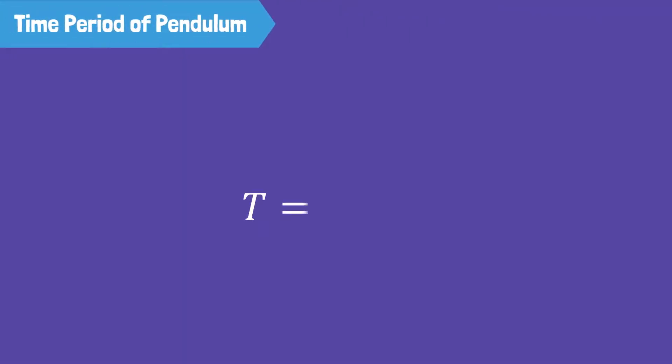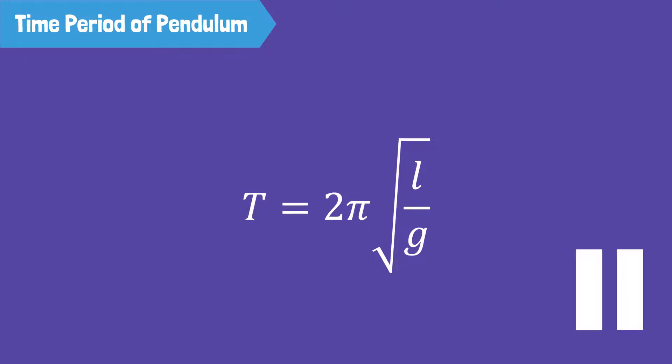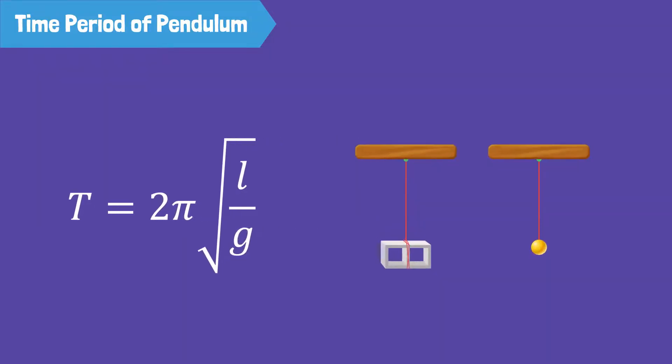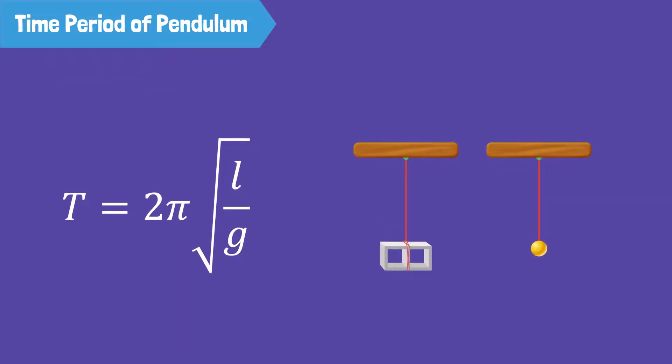The following formula is used to calculate the time period of a simple pendulum. Let's look at a problem. The time period of which of these pendulums will be greater? The first pendulum has a heavy concrete block as its bob. The second pendulum has a light ball.